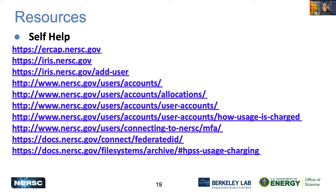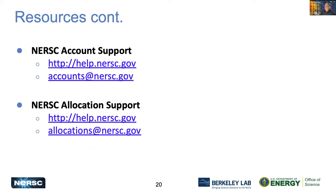NERSC provides a lot of online help, including links for the ERCAP system, IRIS for information on accounts and allocations, how usage is charged, federated identity, and MFA. If you can't find what you're looking for online, you can log a ticket at the NERSC help desk at help.nersc.gov. For account support — problems with access, passwords, or MFA — email accounts@nersc.gov. For anything related to the ERCAP system or allocation problems, email allocations@nersc.gov.